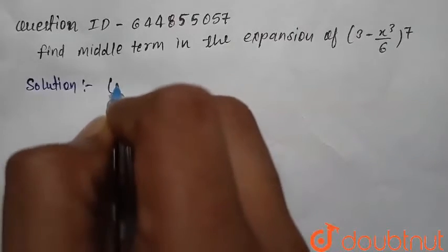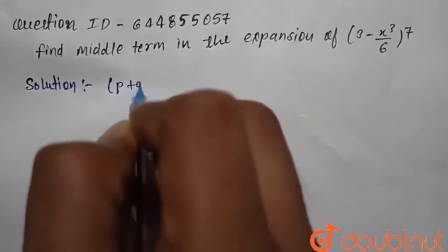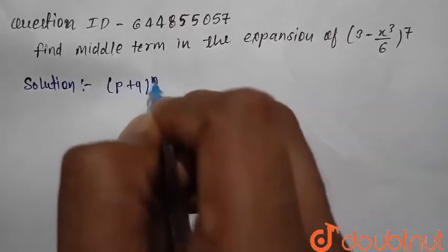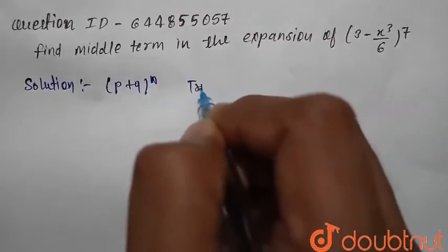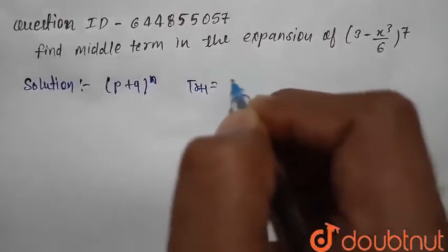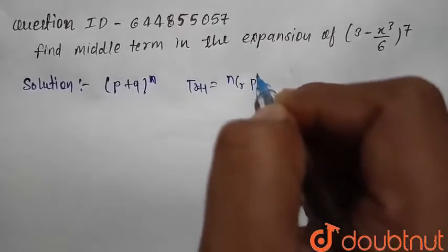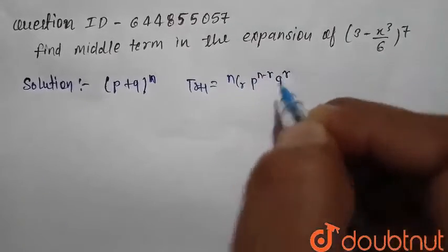First, consider the general binomial expansion (p plus q) raised to power n. The general term of this binomial expansion is nCr times p raised to power (n minus r) and q raised to power r.